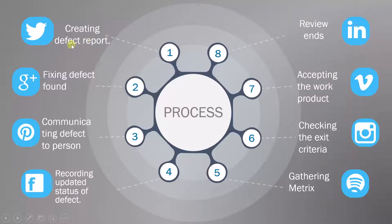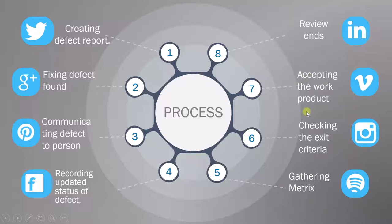So to recap: the first thing you do is create the report, then depending upon the priority you fix the defect, then you communicate to the person that you have fixed the defect, and then you update the status. Then you gather how many defects have been fixed and how many are still remaining. Depending upon that, you check for the exit criteria, and if it is met then you accept the work product — and with that your review process ends for that particular product.